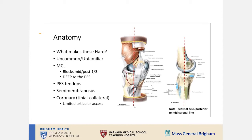I personally look at the fracture side and decide whether it is anterior or posterior to the MCL, then decide what approach to use: anterior medial, posterior medial, or even posterior. Remember that the PES with the gracilis, semitendinosus, and sartorius attach there. You can release them, tag them, and suture them at the end of the case if you need to release them.